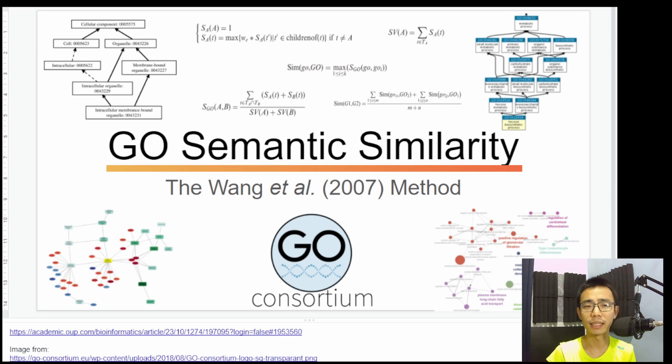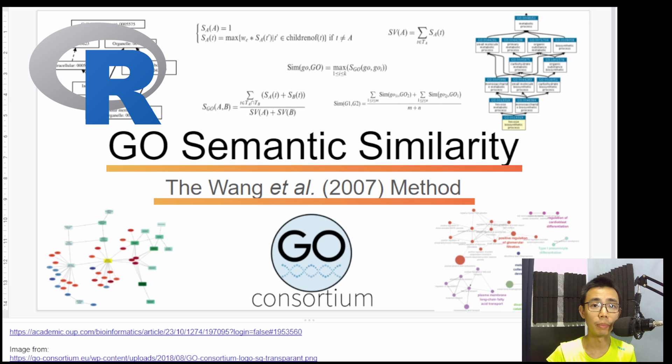Today I want to talk about Go Semantic Similarity using the Wang 2007 method, what it is, how it works, some mathematics behind it, and in the end, how do you actually run such analysis in R, and how do you interpret the result. But before that, let's roll the intro.